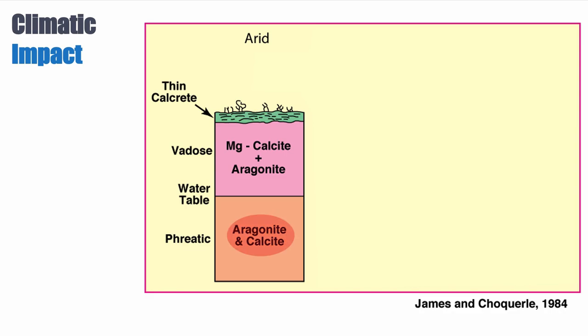Let's think about the influence of climate on meteoric diagenetic processes. In an arid climate like Wadi Bani Khalid today, we don't have a lot of water or precipitation, so the water-rock ratio is relatively low. When the water-rock ratio is low, in the phreatic zone, we have enough water to lose magnesium calcite — the first mineral to go away in meteoric processes — but we still preserve aragonite and calcite.